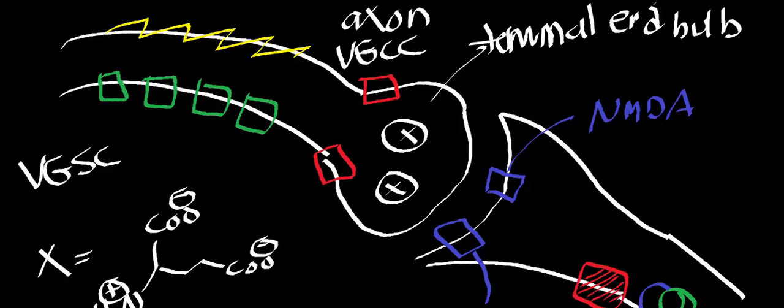Each one of those subunits has a domain four. Domain four is what's referred to as a voltmeter. So as the concentration of sodium increases in the cytosol — which in this case is the cytosol of the axon — when the sodium concentration increases in there, effectively what happens is domain four senses that, and it causes the voltage-gated sodium channel to change conformation and allows sodium to enter the axon.